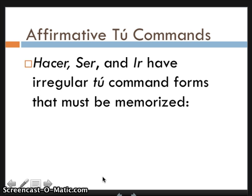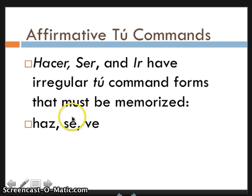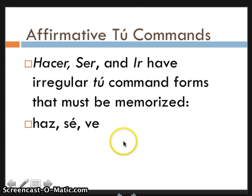'Hacer,' 'ser,' and 'ir' have irregular tú command forms that must be memorized because they're just weird. So 'hacer' becomes 'haz,' 'ser' becomes 'sé' with an accent, and 'ver' becomes 've' without an accent. 'Sé' gets an accent because, if you covered it up, it looks like a reflexive pronoun — me, te, se, nos, se — so we need the accent there so that people know it's a verb.